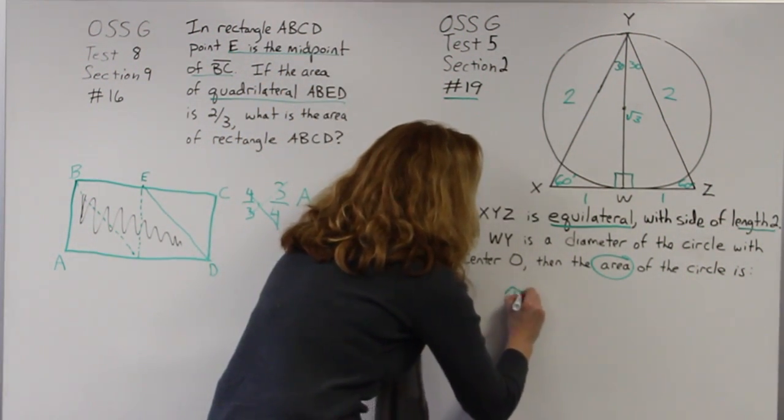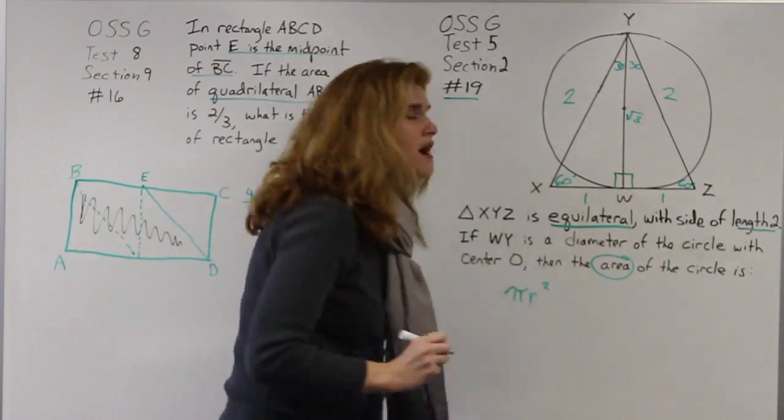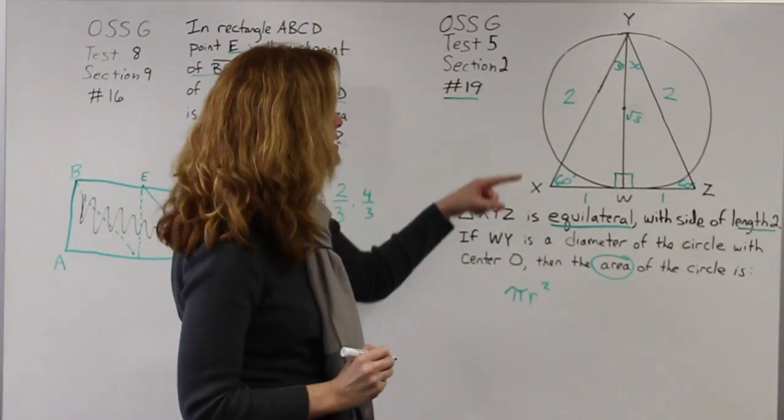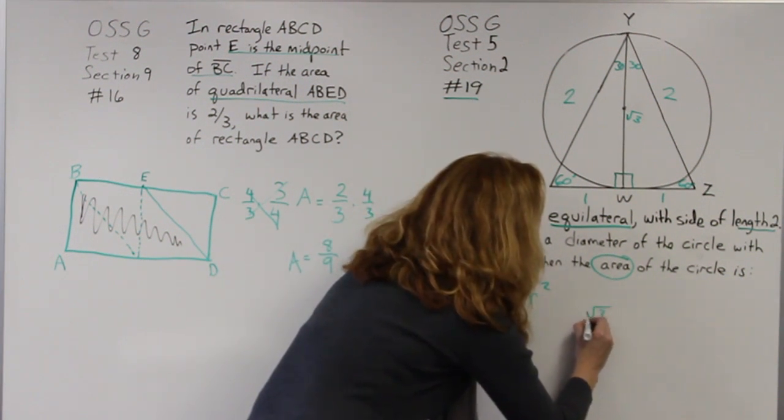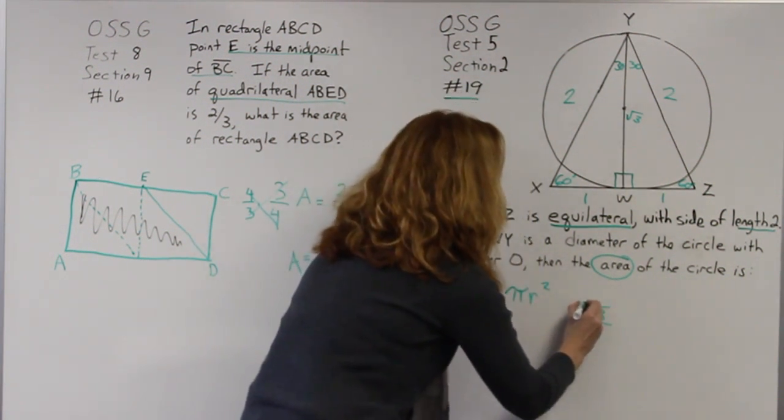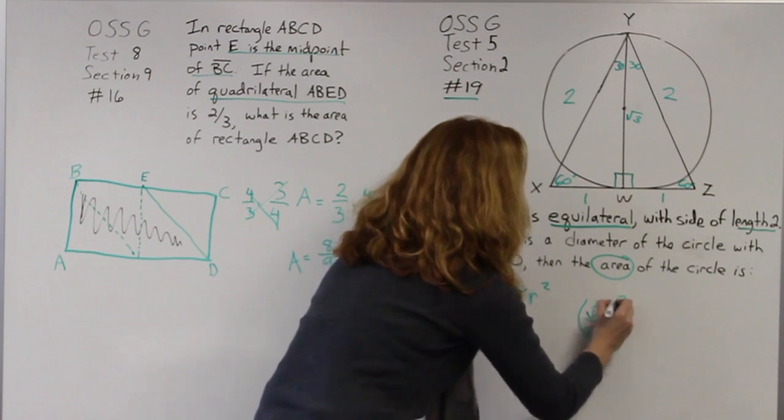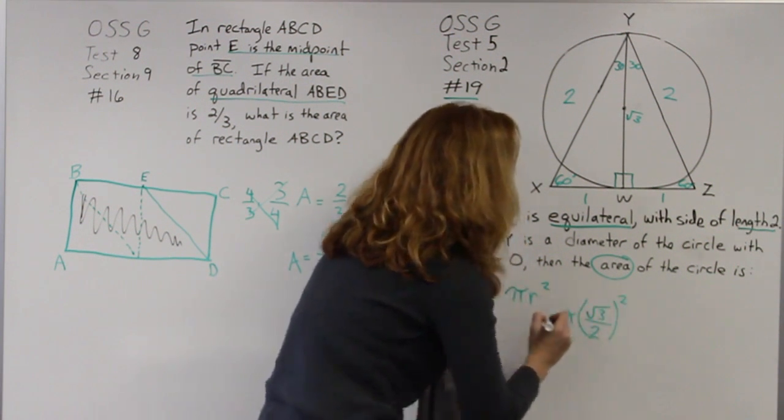I remember that area of a circle is pi r squared. So I'm taking my radius, which is root 3 over 2. I am squaring that, and I'm multiplying it by pi.